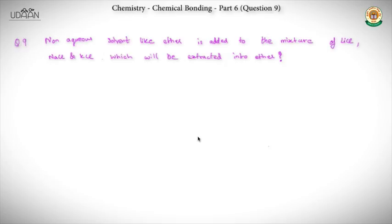Now the question in front of us is a non-aqueous solvent like ether is added to the mixture of LiCl, NaCl and KCl. Which amongst these three compounds will be extracted into ether? First of all we know the basic concept of solvation is like dissolves like. As we know ether is a non-polar compound therefore the compound which will be the most covalent will dissolve in ether.